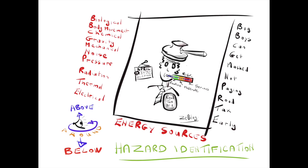In hazard identification, the brain tattoo or mnemonic — the memory jogger of 'Big Boys Can Get Mashed, Not Paying Road Tax Early' — is particularly useful when we think of energy sources. That stands for: biological hazards, body movements (pulling, pushing, lifting), chemical, gravity and fall from height, mechanical, noise, pressure contained within vessels and pipelines, radiation, thermal (hot and cold), and electrical energy sources.